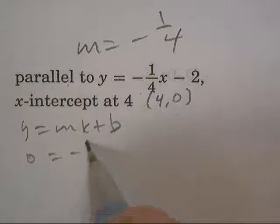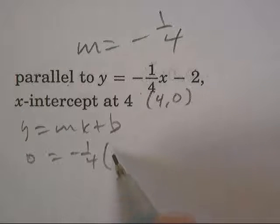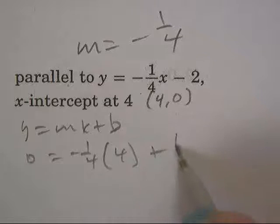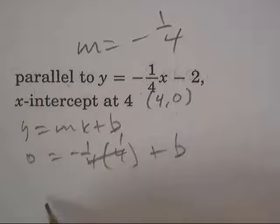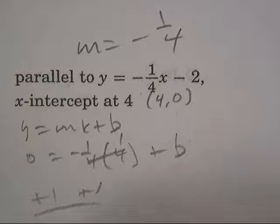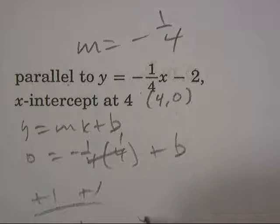y is zero, m is negative one-fourth, x is four, plus b. Four divides, add one, b is one.